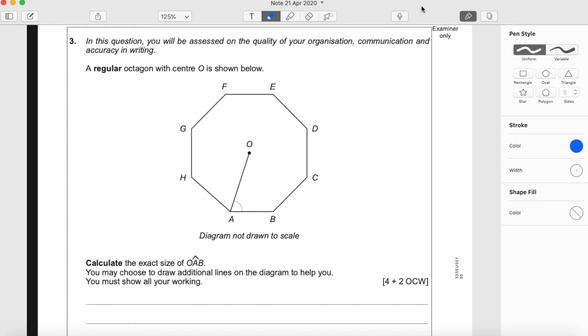Hello and welcome to question 3 of this WJEC GCSE Maths paper. This is Unit 1, the non-calculator paper, higher tier for summer 2019.